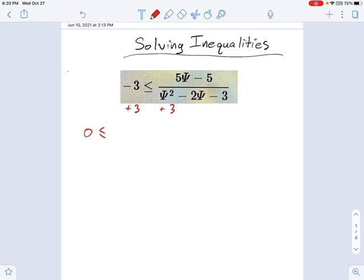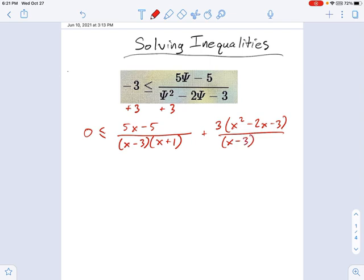So here's what we have. 0 is less than or equal to 5x minus 5 over x squared. And I think I can factor the bottom here. That might be helpful. That's going to be x minus 3 and x plus 1. And it's plus 3. So plus 3. Now that plus 3 is going to be 3 times x squared minus 2x minus 3. I'm going to leave the top unfactored and the bottom factored. This is not really an important thing. I think I might just save a little bit of time doing it this way.